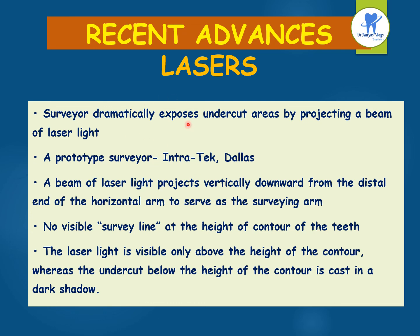Coming to recent advances, that is lasers. The surveyor dramatically exposes undercut areas by projecting a beam of laser light, and the prototype surveyor is the Intratek system. The beam of laser light projects vertically downward from the distal end of the horizontal arm to serve as the surveying arm. No visible survey line appears at the height of contour of the teeth. Laser light is visible only above the height of contour, whereas the undercut below the height of contour is cast in a dark shadow.